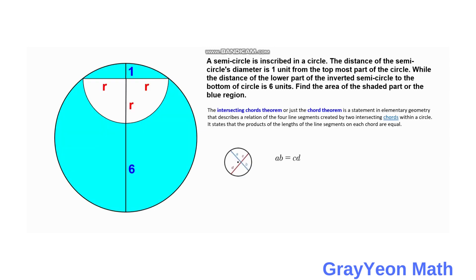Next, we make a review of intersecting chords theorem. The intersecting chords theorem, or just the chord theorem, is a statement in elementary geometry that describes a relation of the four line segments created by two intersecting chords within a circle. It states that the products of the length of the line segments on each chord are equal.